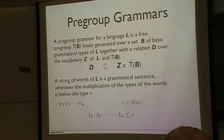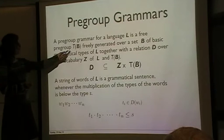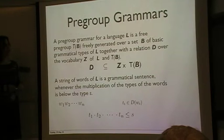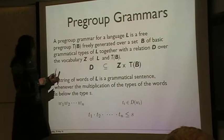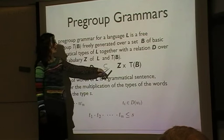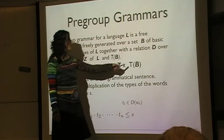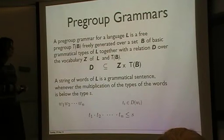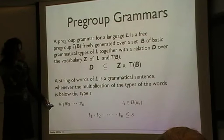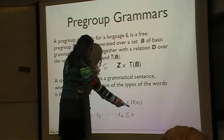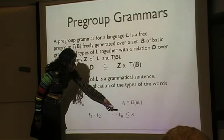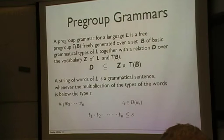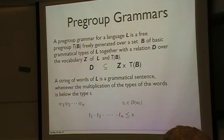So how does this relate to linguistics? Alright, so we say, Lambeck said, we can define something called a pregroup grammar. And a pregroup grammar for a language L is a free pregroup T of B freely generated over a set B of basic grammatical types of the language. Together with a relation, normally referred to as a dictionary relation, over the vocabulary Z of the language and T of B. So you assign best to each element of the vocabulary to each word of the language, a set of types from this free pregroup. And then, for example, then you're, if you're given a string of words of your language, you're going to say that this is a grammatical sentence. So if you have this string of words that we want WN, this is going to a grammatical sentence. Whenever, for each TI in the dictionary relation D of WI, the multiplication of the T's is below, let's only call the designated element S, which in this setting will stand for the type sentence. So you've got a very nice algebraic way of thinking about what is grammatical and what's not.